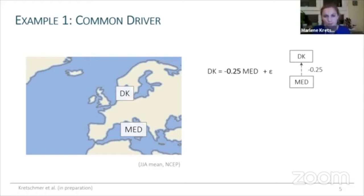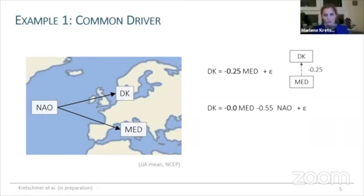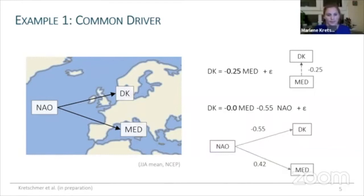As climate scientists, we wouldn't interpret this causally, because we know from different lines of evidence that precipitation in both regions is driven by the position of the North Atlantic storm tracks, expressed by the North Atlantic Oscillation (NAO) index. We can test this knowledge with the data: in the linear case, controlling for the common driver NAO simply means including it in our regression model. And if we include the NAO, the regression coefficient drops to 0, confirming that the strong correlation comes from the causal effect NAO has on both regions.